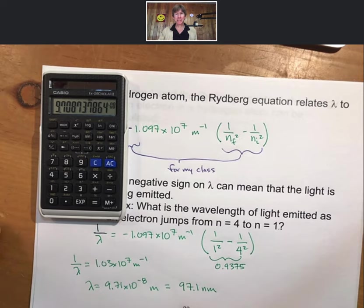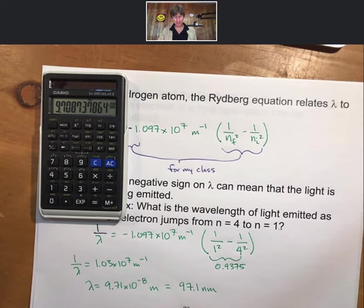97.1 nanometers is not in the visible region — that is in the ultraviolet region, as expected, since we expected that shift to be higher energy than the ones in the visible region.